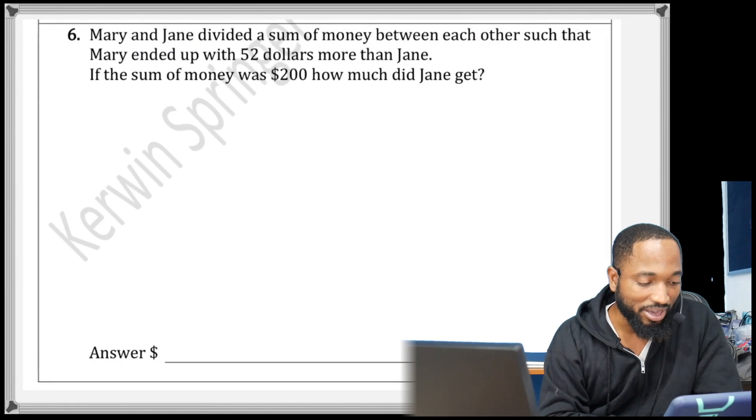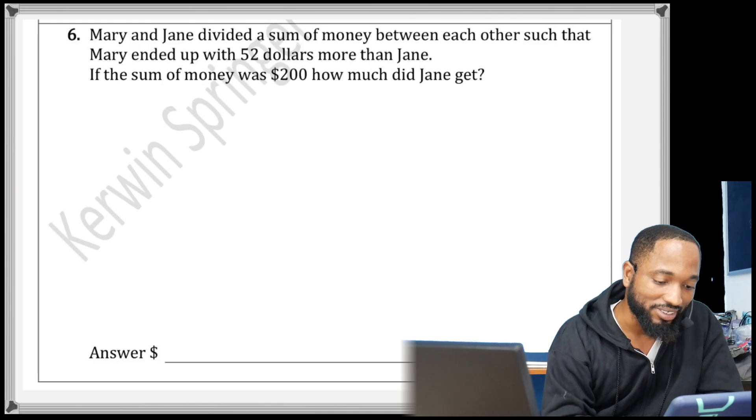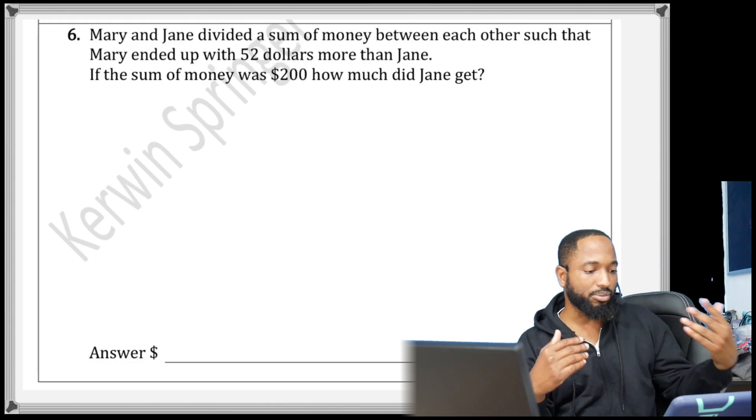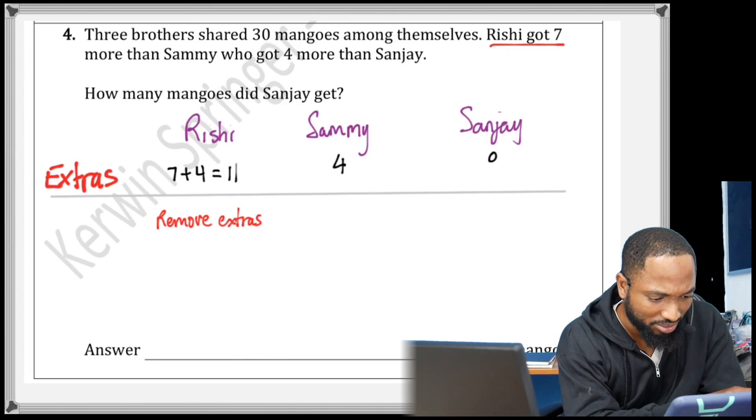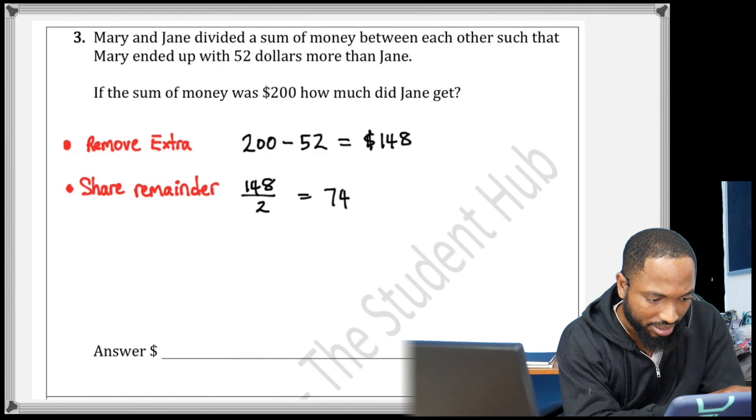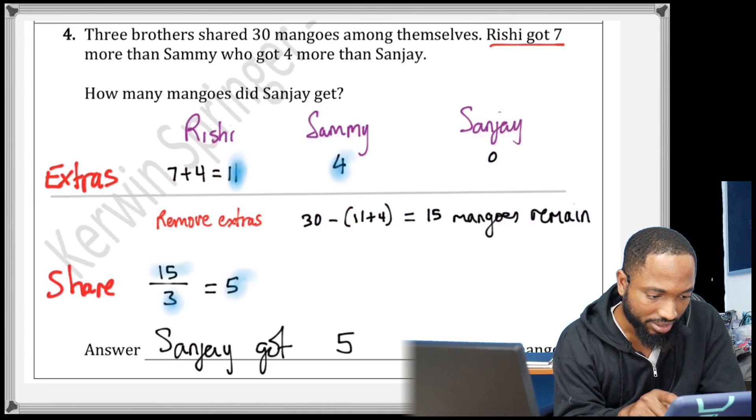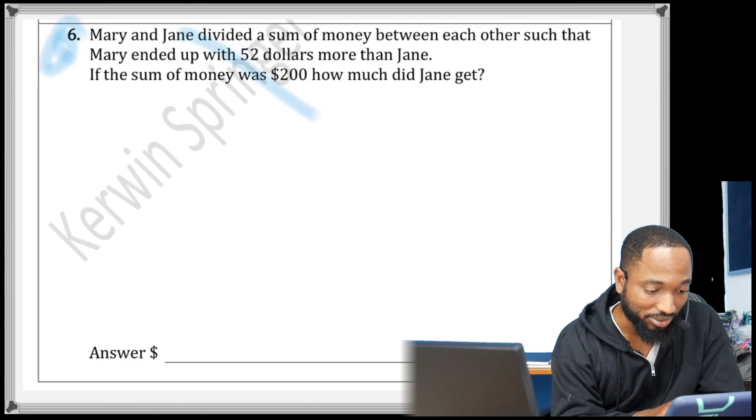You can try this question here. Mary and Jean divided the sum of money between each other such that Mary ended up with $52 more than Jean. If the sum... so this is another easy one you can try. Did I do this question already? I feel like I did this already. Oh yeah, I did this already.